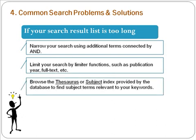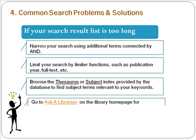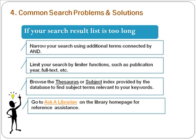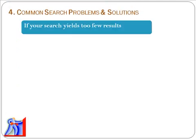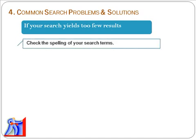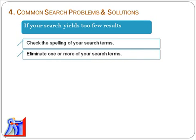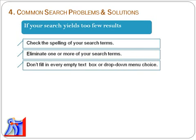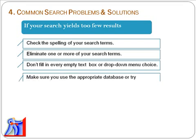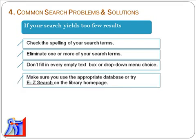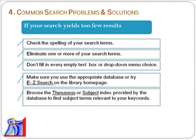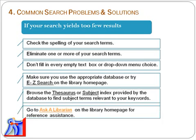Browse the database's thesaurus or subject index to find subject terms relevant to your keywords, or go to Ask a Librarian on the library's homepage for reference assistance. What should you do if your search yields too few results? Suggestions include: check your spelling, eliminate one or more of your search terms, don't fill in every empty text box or drop down menu choice, try Easy Search on the library's homepage where you can search many databases at one time, or browse the thesaurus or subject index provided by the database.